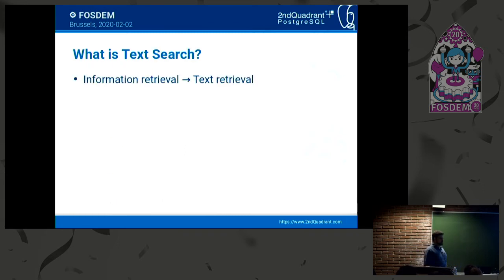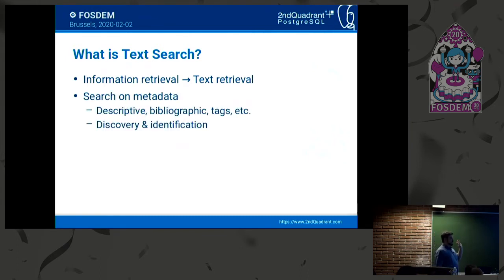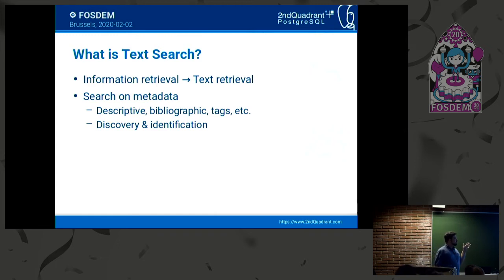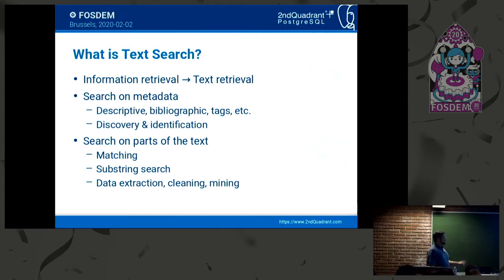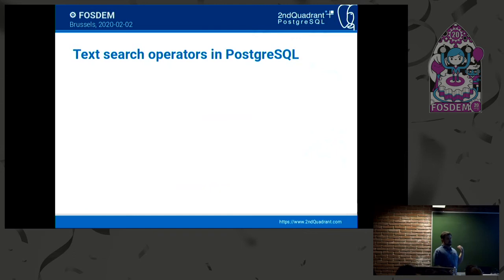What is text search? We're talking about information retrieval, and more specifically text retrieval. This is a well-known domain used mainly for searches on metadata — descriptive, bibliographic, tags — used for discovery and identification. When you're talking about text search and text matching, you're not necessarily trying to identify articles through their content; you're looking at metadata fields and matching words. So it's useful for matching, substring search, data extraction, data cleaning, and data mining.